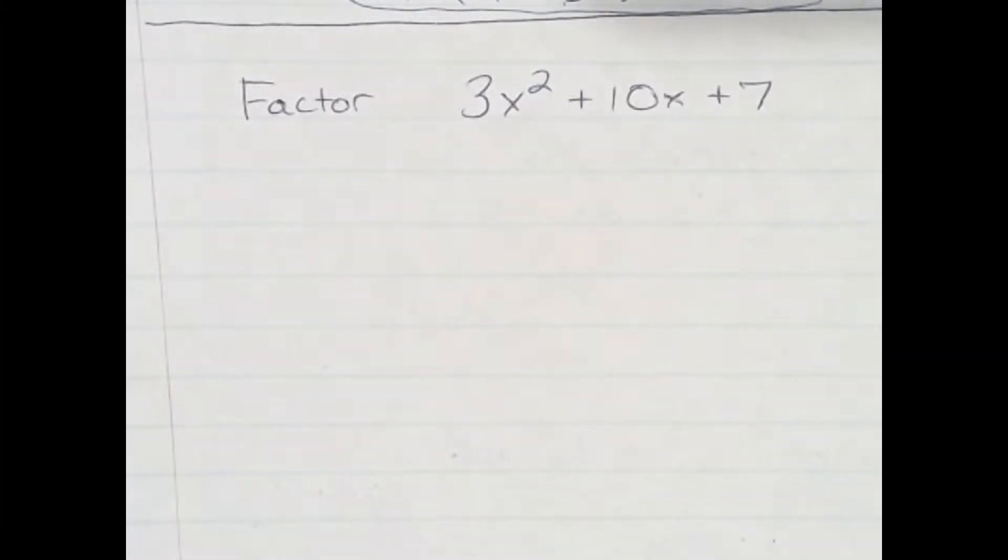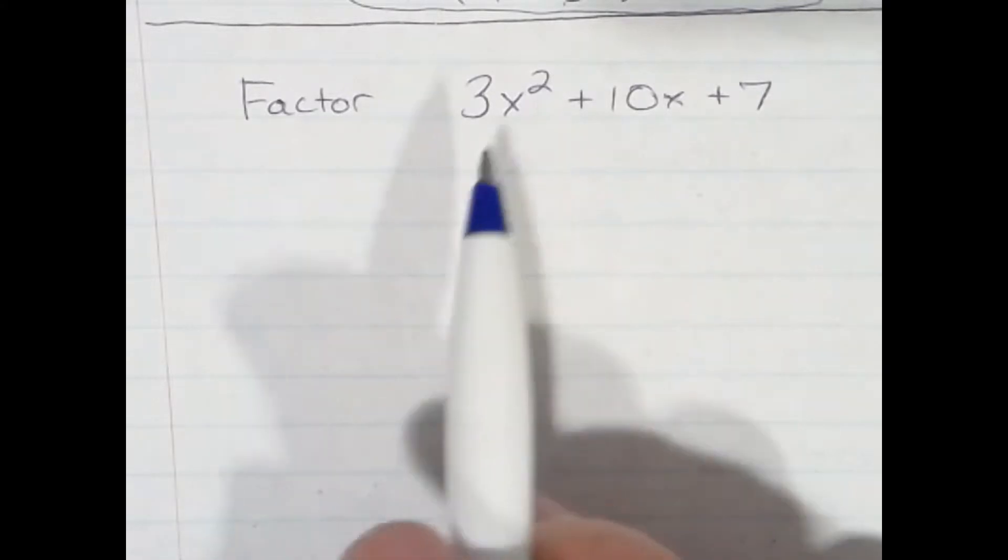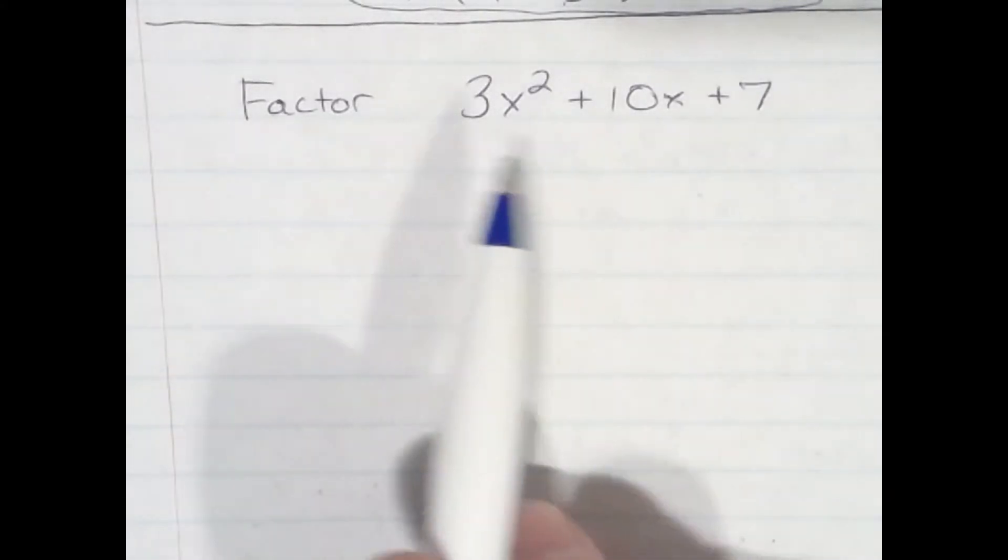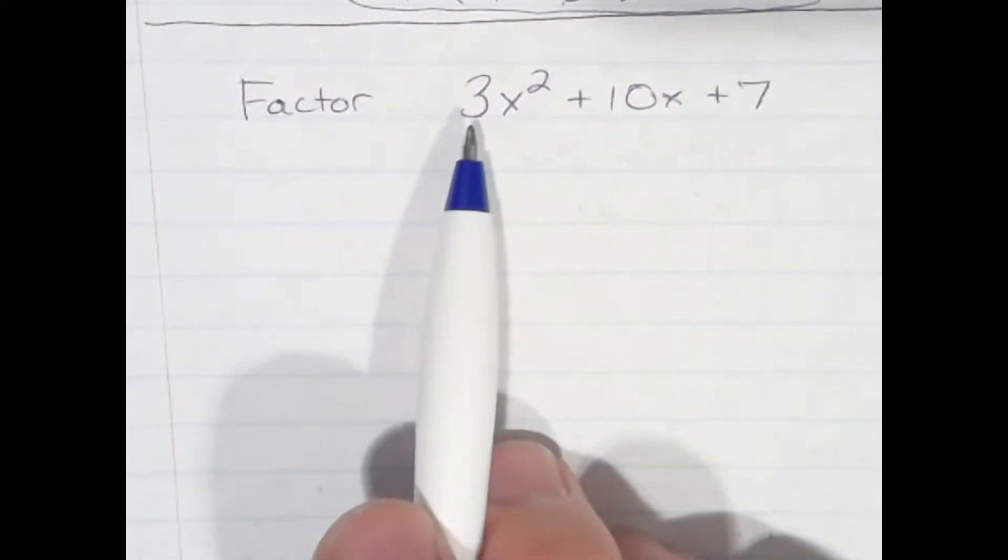Alright, so we're going to factor a quadratic trinomial with a term for A, the A number, greater than 1.